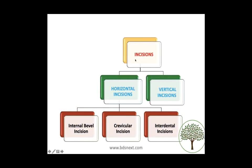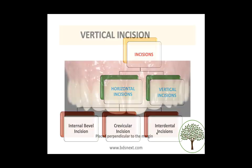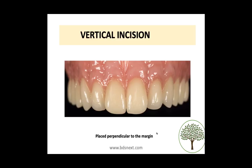Coming to the classification of incisions, we have horizontal incisions and vertical incisions. Horizontal incisions can be classified into internal bevel, crevicular, or interdental incisions. A vertical incision is always given in this direction and is the only vertical incision you'll come across in periodontal flap surgeries, whereas horizontal incisions are given like this.